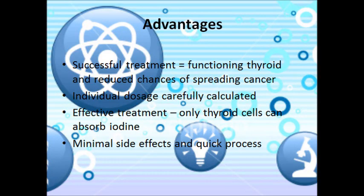There are many advantages of iodine-131 therapy. Firstly, if the treatment is successful, the thyroid should start functioning as normal and reduce the chances of cancer spreading. People having iodine-131 therapy will have their dosage calculated carefully in relation to their body weight and levels of cancerous cells or thyroid overactivity. As mentioned before, thyroid cells are the only cells which can absorb iodine, allowing the treatment to work effectively on only the targeted cells and cause no harm to any other part of the person's body.